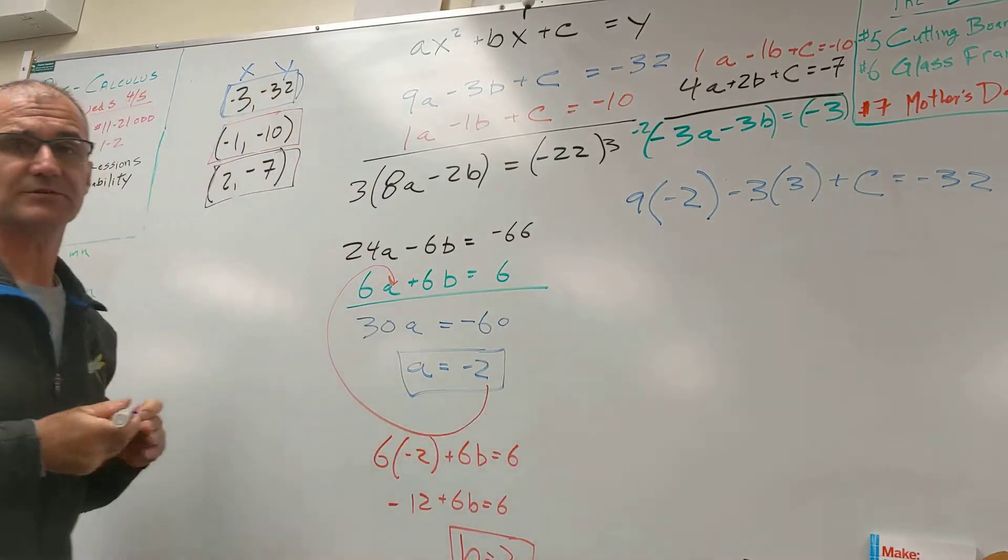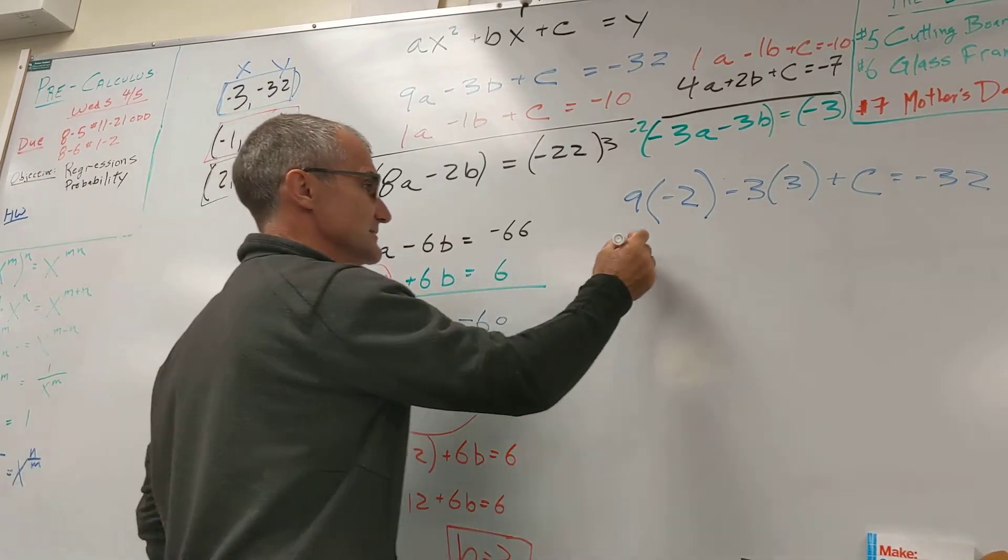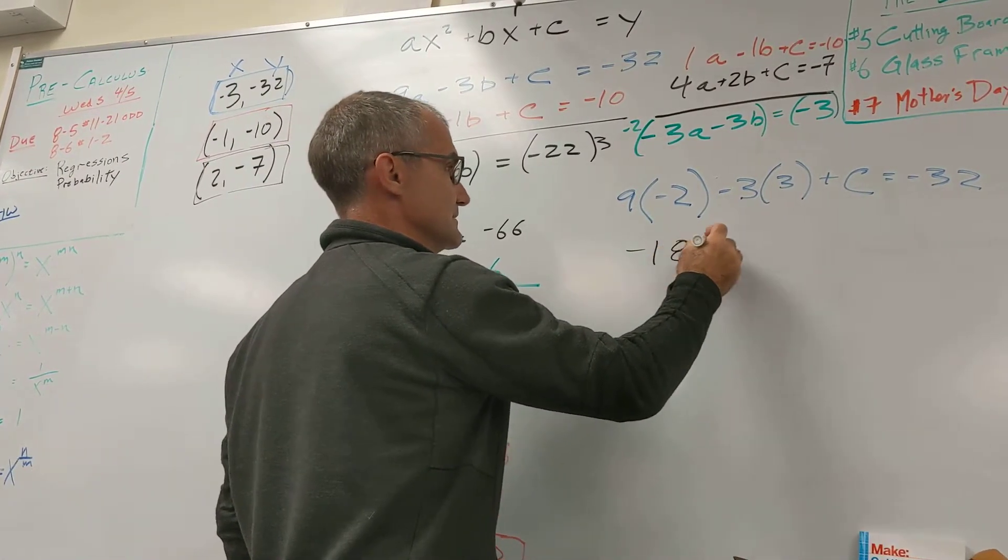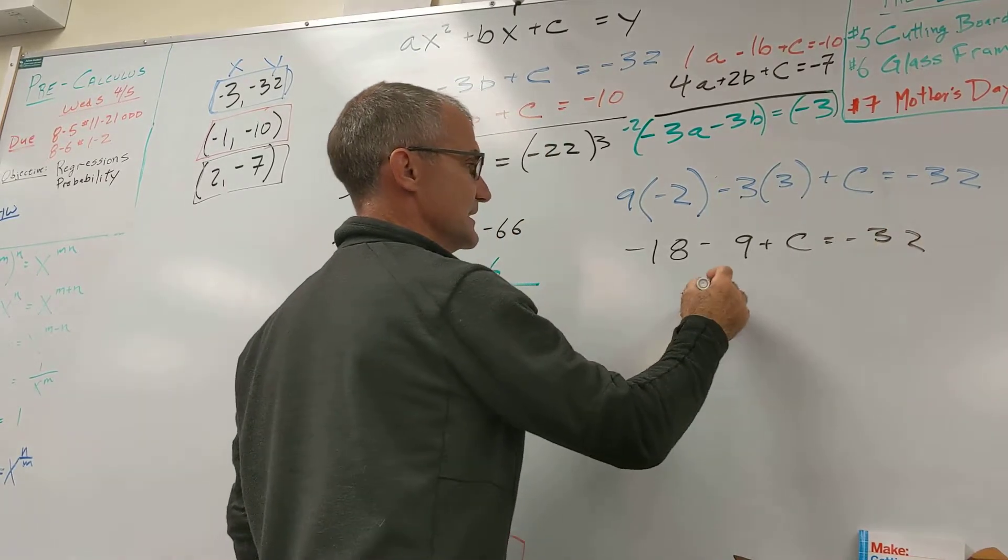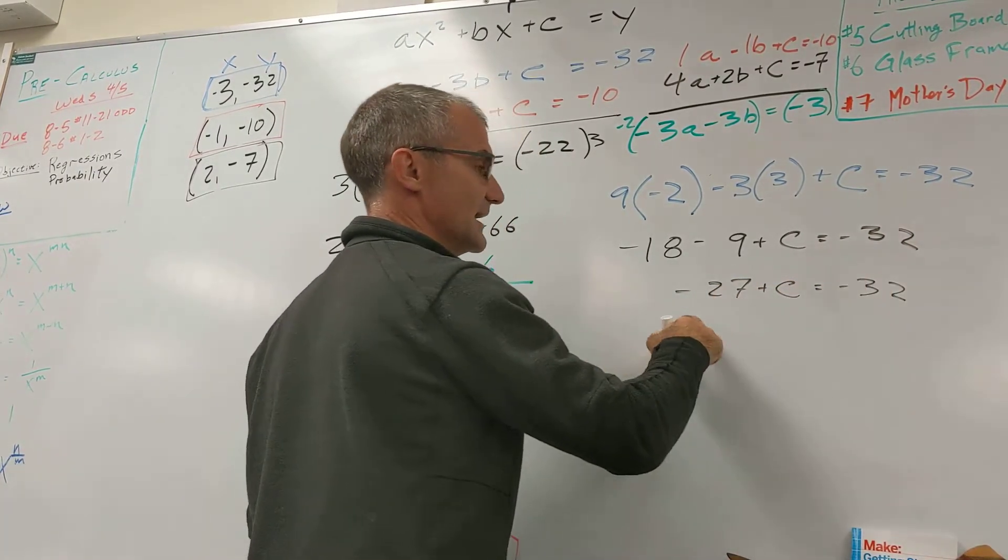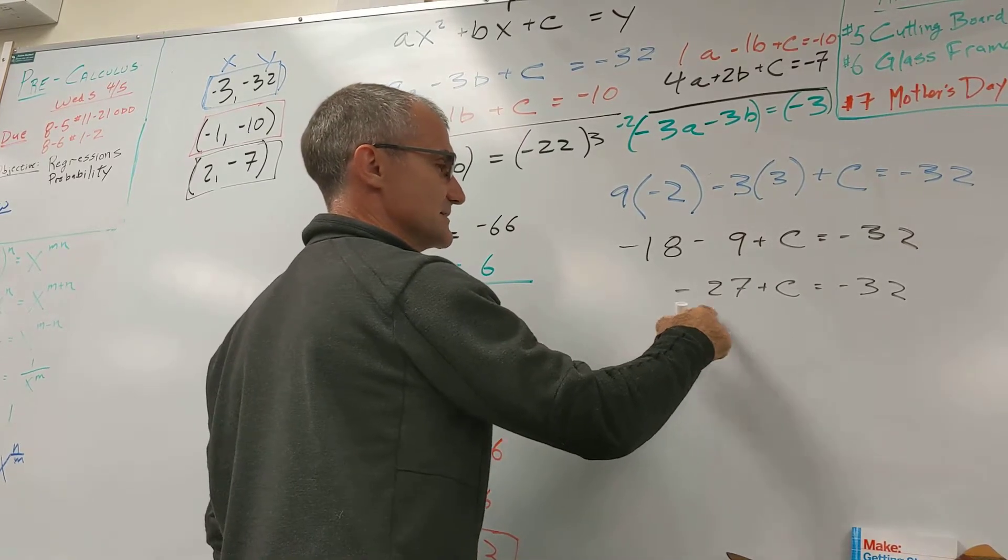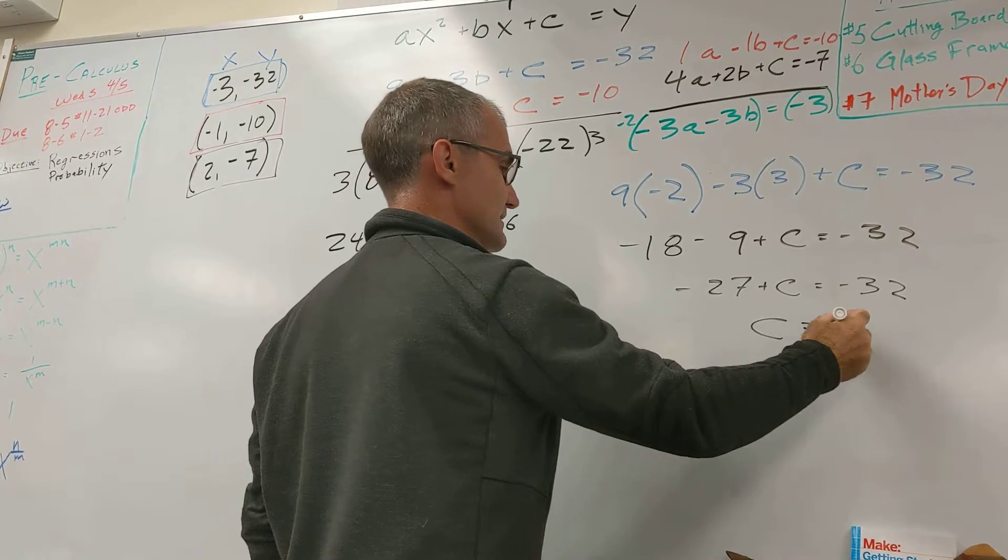One equation, one variable. So now I just need to isolate that variable. Negative 18, negative 9, plus c, equals negative 32. Negative 27, plus c, equals negative 32. I'll add 27 to both sides. To get c equals negative 5.